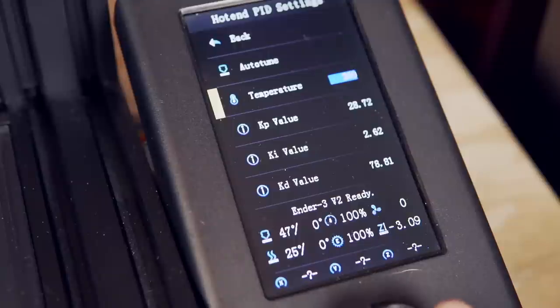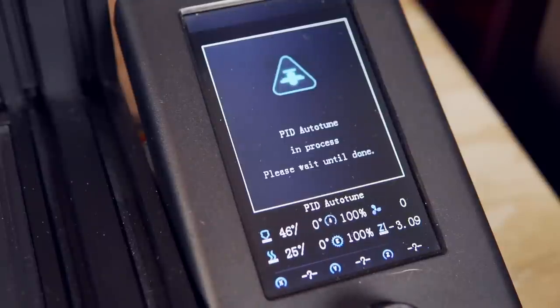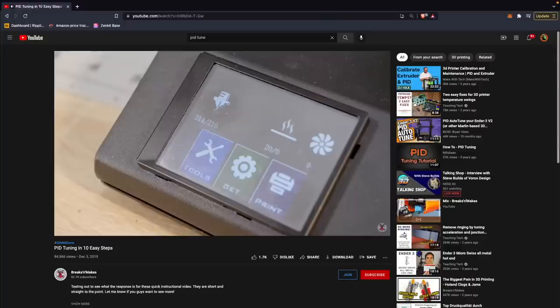If you do not have an Ender 3 V2 or if you're not using Jyers firmware, this can still easily be done by hooking up the printer to a computer that has a console that you can just run some commands. Breaks and Makes has a super simple video on this process which I will also have linked in the description.